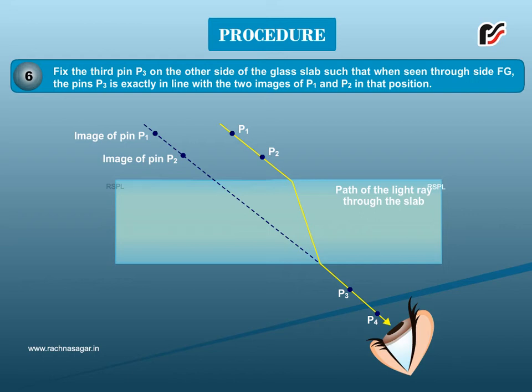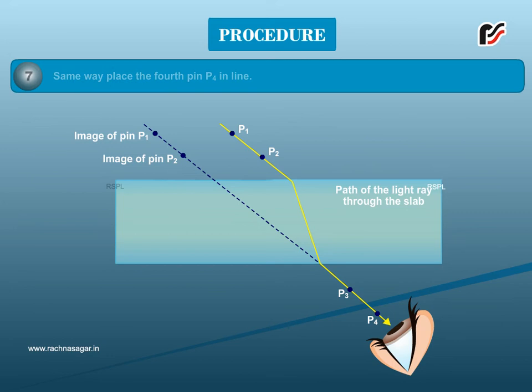Fix the third pin P3 on the other side of the glass slab such that when seen through side FG, the pin P3 is exactly in line with the two images of P1 and P2 in that position. In the same way, place the fourth pin P4 in line. Join points P3 and P4 to meet side FG at B. Join AB to depict the refracted ray.